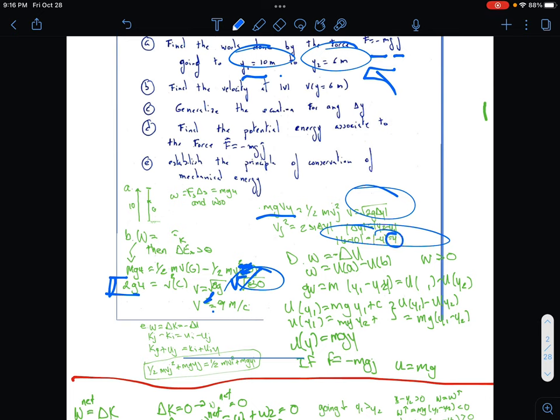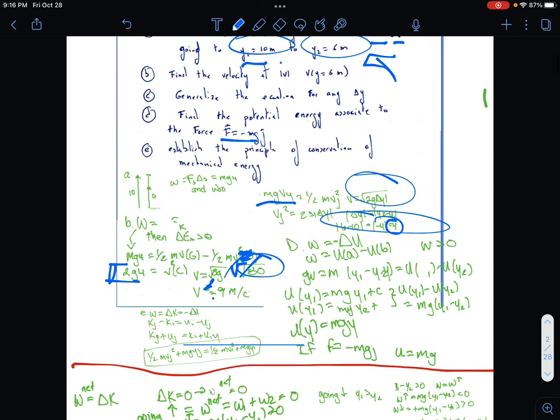The potential energy associated to the force F minus, F equals negative mg*j. So we already have what we're going to use, we're just going to follow the steps and plug in the numbers later on.